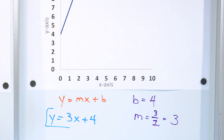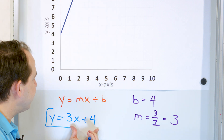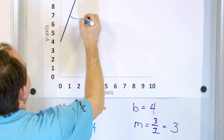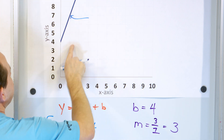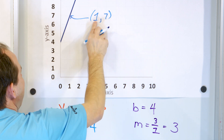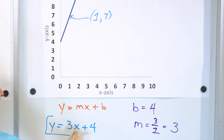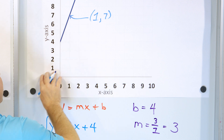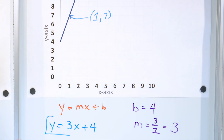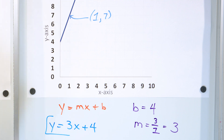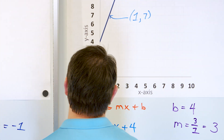You can always check yourself — does this equation really predict all of the points on this line? Let's pick this point right here: one comma seven. If we put x equal to one, we get three times one is three, and three plus four is seven. So one comma seven is on the line. If you pick any other point on this line, when you plug it into this equation, it does satisfy it. So we know this is the correct equation of this line.